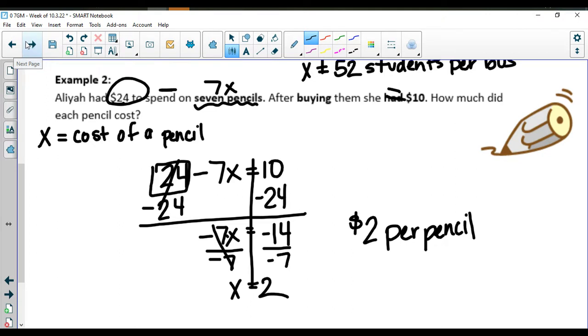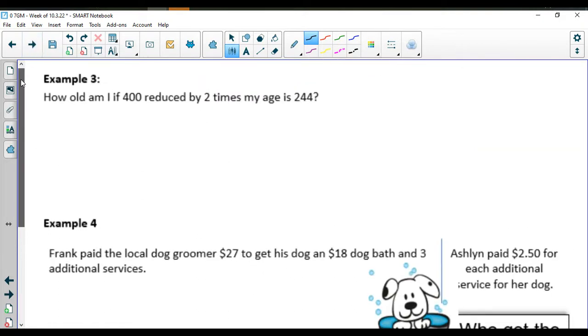So far have you had two examples written down in your notes completely? Example number three. How old am I if 400 reduced by two times my age is 244? We don't know how old I am so we're going to say X is my age.